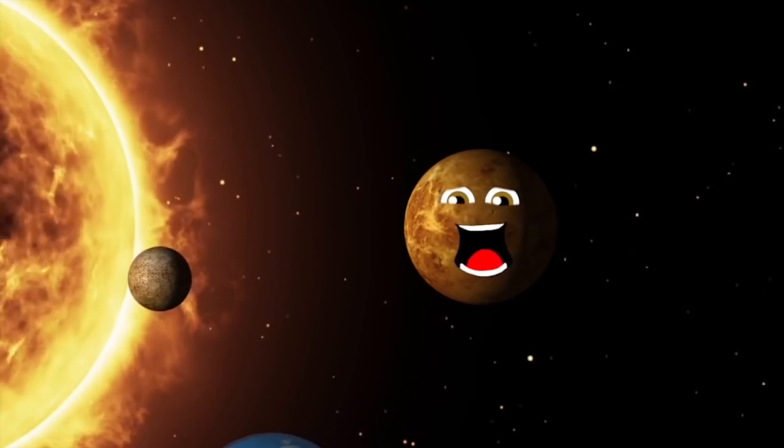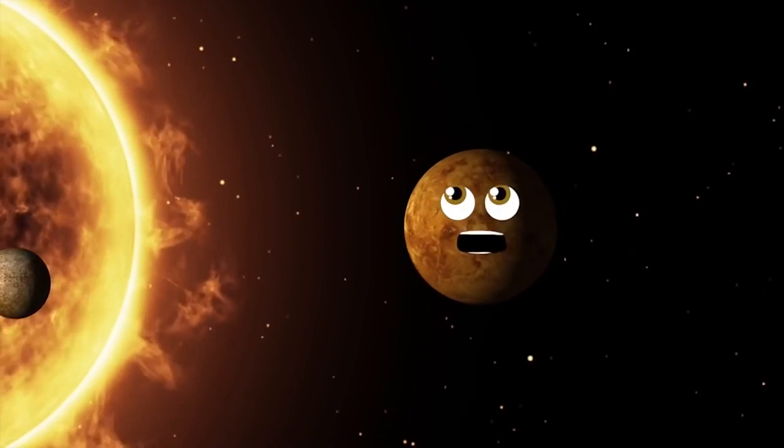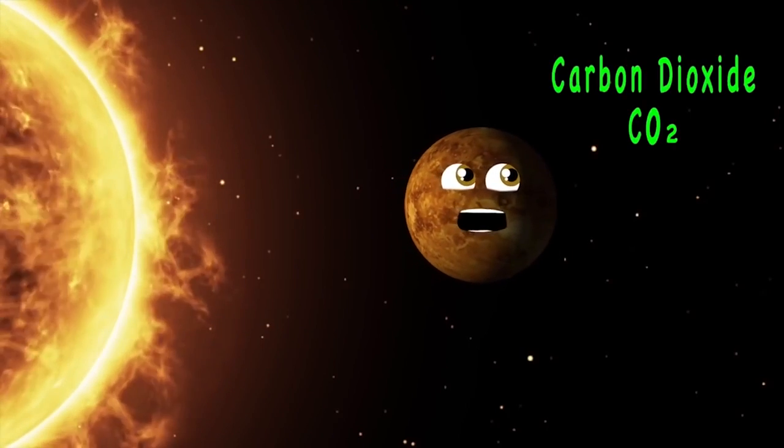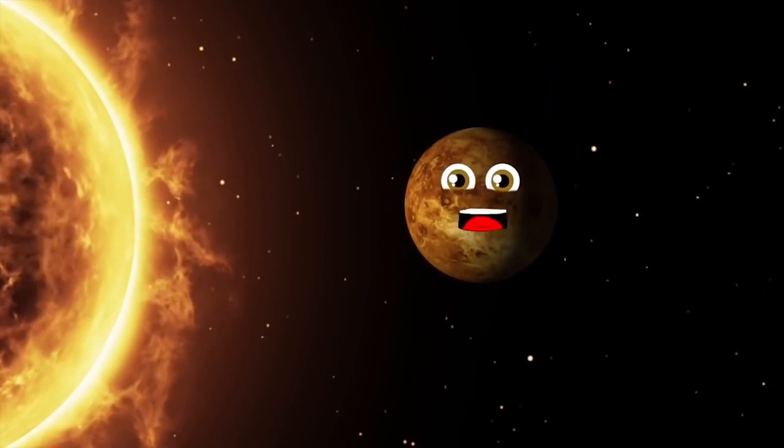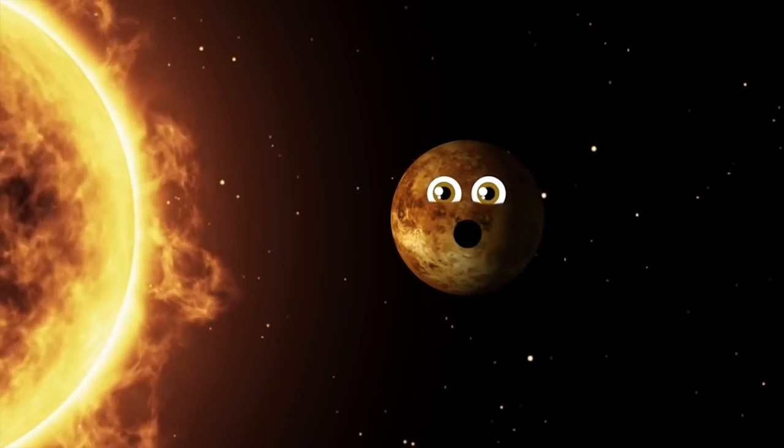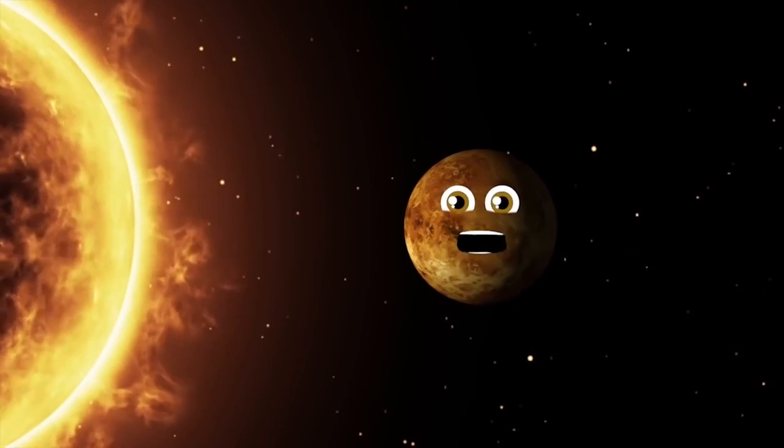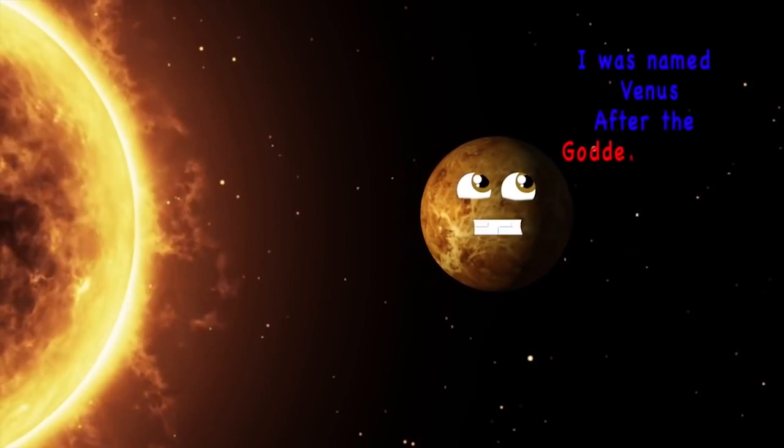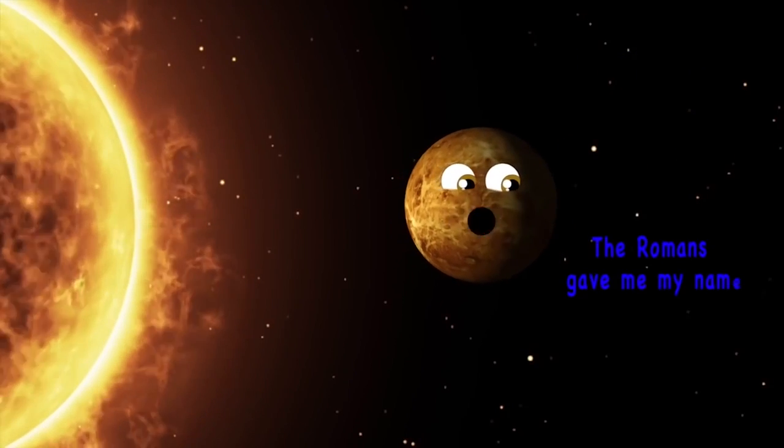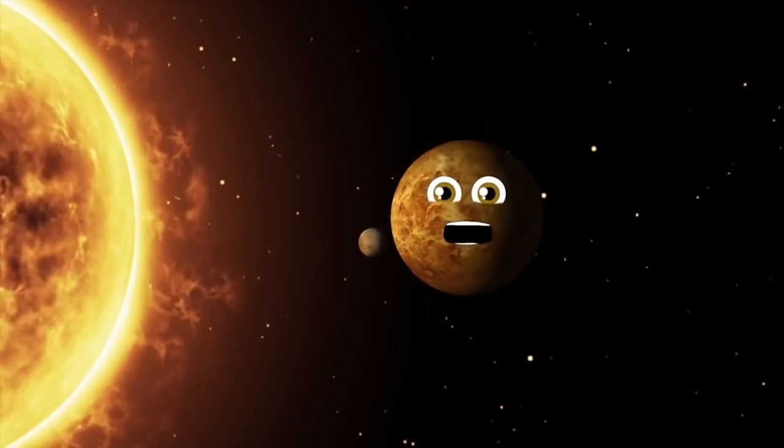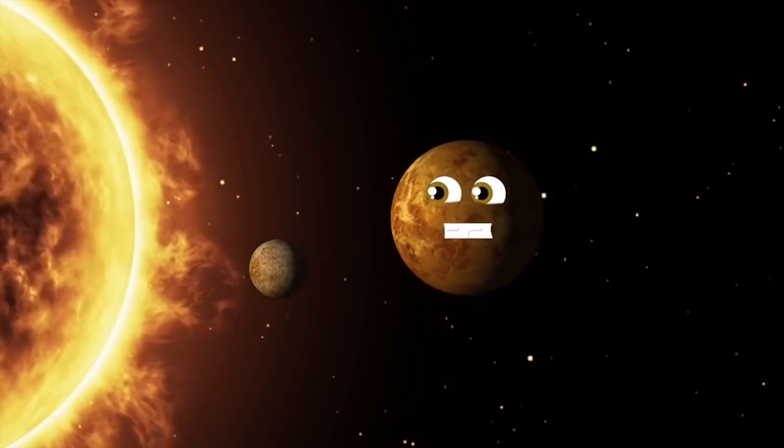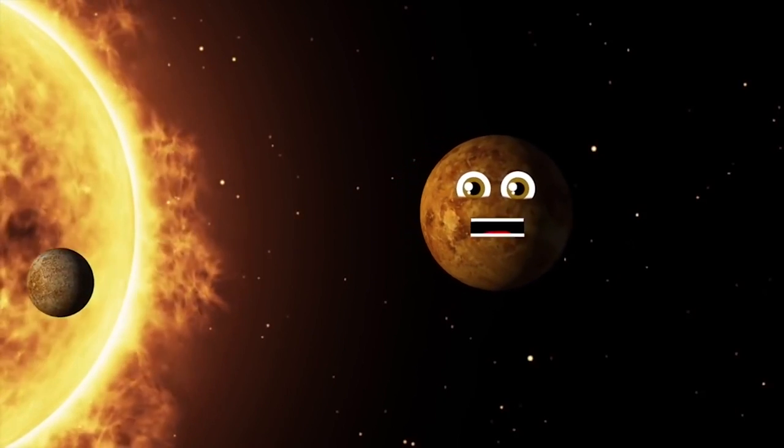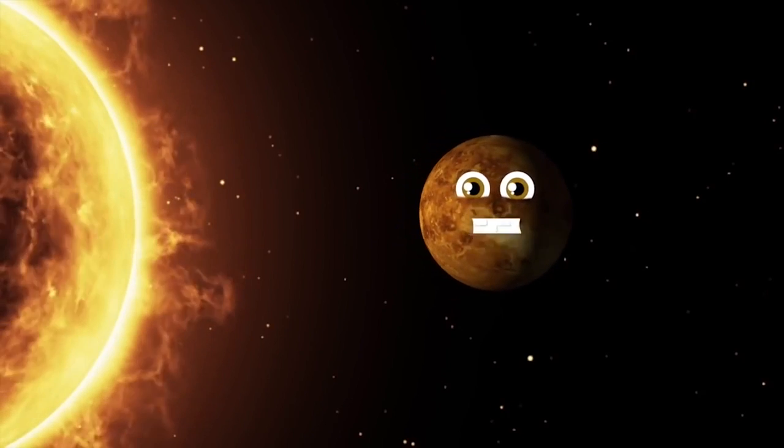Carbon dioxide and sulfuric acid clouds is what makes up my atmosphere. Volcanoes, mountains, craters, and some big lava plains are what make up my bumpy surface and my clouds.